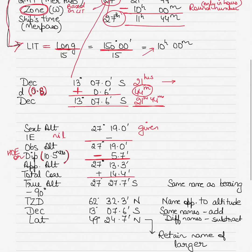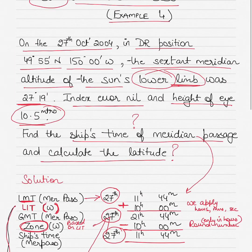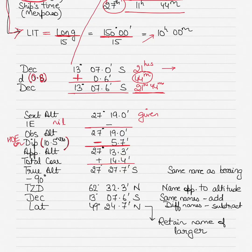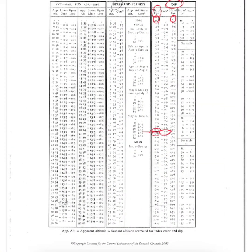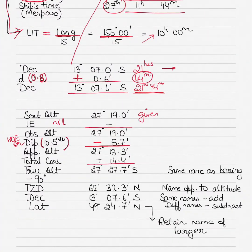For the total correction, note the apparent altitude of 27°13.3', the month (October), and that it is the Sun's lower limb. Go to the total correction table for the Sun. Under the October lower limb column, 27°13.3' lies between 26°34' and 27°50', and the correction is plus 14.4'. Applying this gives a true altitude of 27°27.7'.